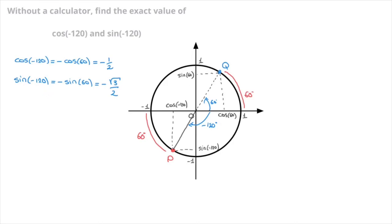And so that's how we can find values of both cosine and sine for angles that fall in the third quadrant. That's it for this tutorial — I really hope that helped. If it did, please hit like on this video and even subscribe to our channel, because that really does help us. I'll see you soon.